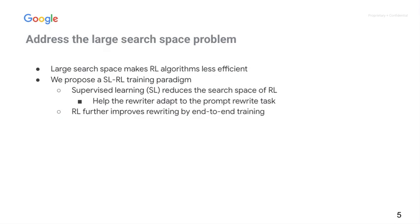To address the large search space problem, we propose the SLRL training paradigm. We first train the prompt rewriter by supervised learning, which reduces the search space of reinforcement learning and helps the rewriter adapt to the task. Then we train the rewriter by RL, which further improves rewriting by end-to-end training.